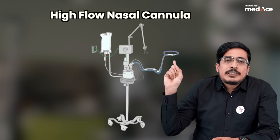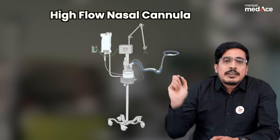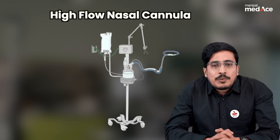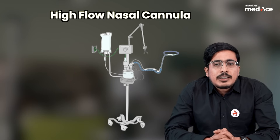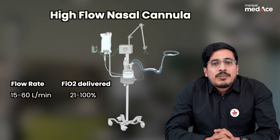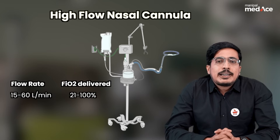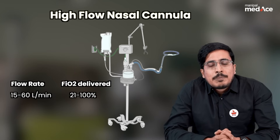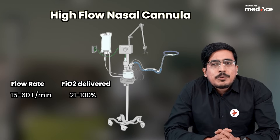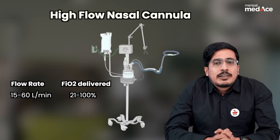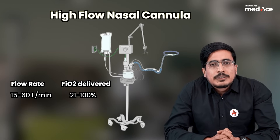The last device is HFNC, that is High Flow Nasal Cannula. Here, the flow rate can be adjusted from 15 to 60 liters per minute, and the FiO2 delivered can be adjusted from 21 to 100 percent.